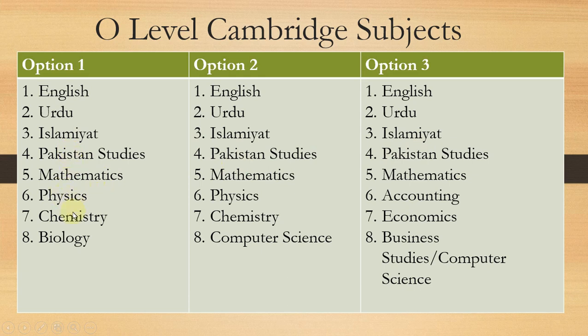In Option 2, instead of Biology you can take Computer Science. Option 3, along with these five subjects, you can choose Accounting, Economics, Business Studies, or Accounting, Economics, and Computer Science. You are going to decide which option you choose.